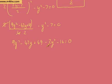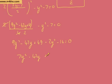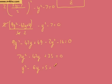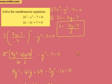Tidying all this up: 7y squared minus 42y, and 49 minus 14 gives 35, equals 0. This all divides by 7, so we get y squared minus 6y plus 5 equals 0. That factors nicely as (y minus 1)(y minus 5) equals 0. So y is 1 or y is 5.